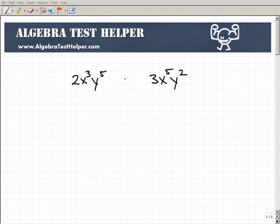First, let's see if we can add or subtract them. If I have 2x³y⁵ plus 3x⁵y², what would you do? Can we simplify this? Can we combine them together?